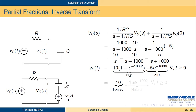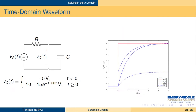We can also regroup these by their dynamics: 10 is the forced response to the constant input of 10 volts, and minus 15 e to the minus 1,000 T is what we call the natural response — the homogeneous solution to the differential equation. Looking at the graph: we see minus 5 volts for T less than zero; the dashed line going from zero up to 10 volts is the zero-state response; the dash-dot line going from minus 5 to zero volts is the zero-input response. When you add those up, you get the total voltage across the capacitor, which goes from minus 5 volts at T equals zero to 10 volts as T goes to infinity.